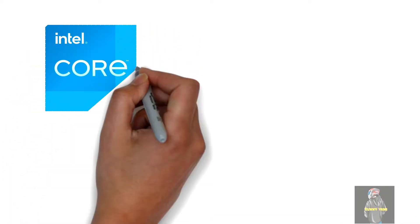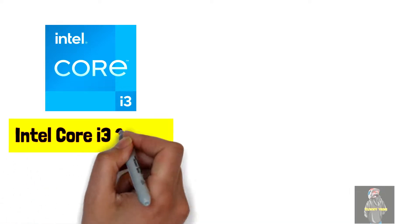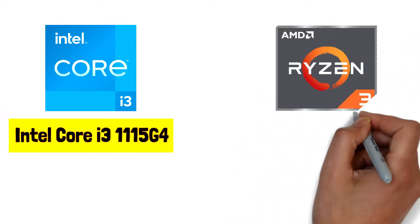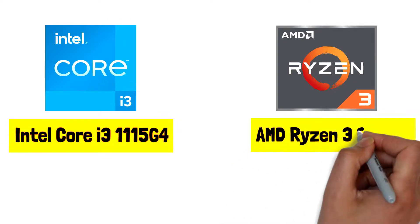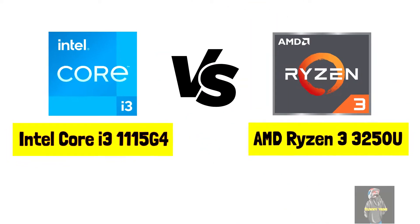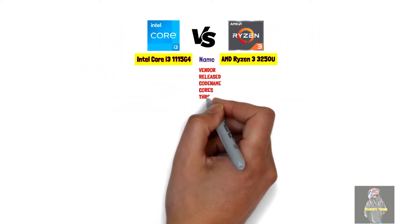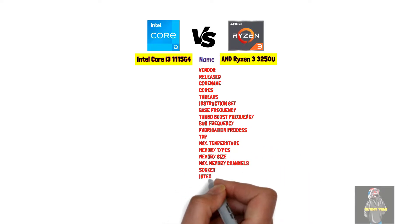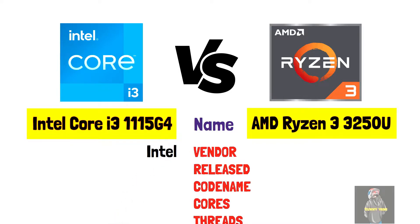Intel Core i3-1115G4 versus AMD Ryzen 3 3250U. Name difference between them: Intel versus AMD.